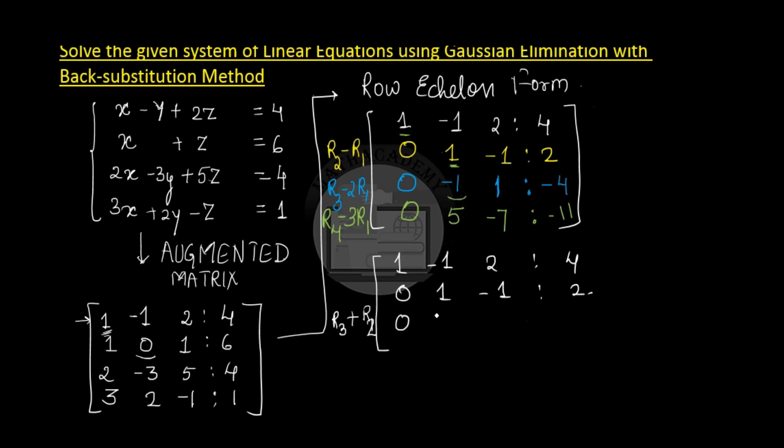So 0 plus 0 is 0, minus 1 plus 1 is 0, 1 minus 1 is 0, and we get a minus 2 here. And the fourth row is kept as it is.